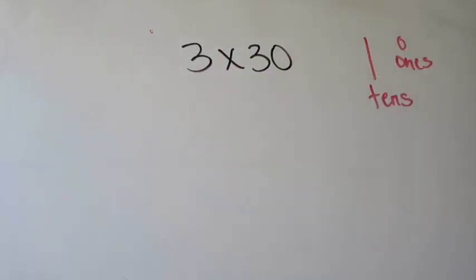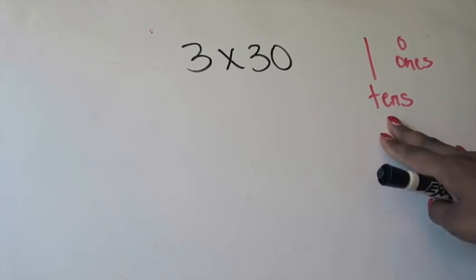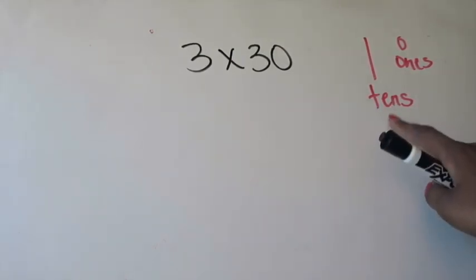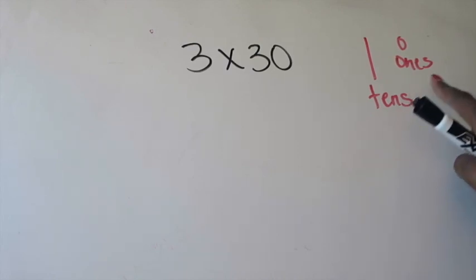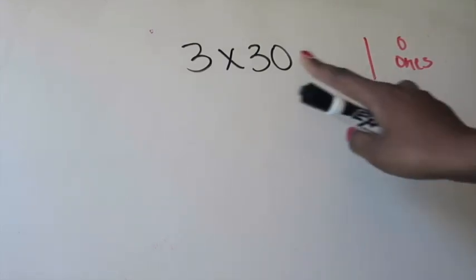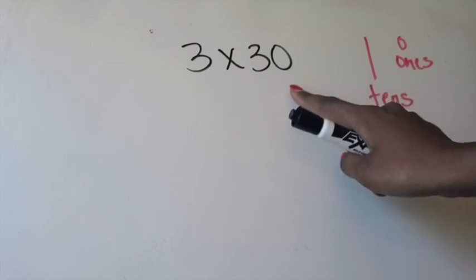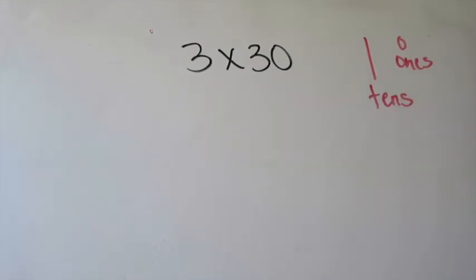The first thing I need to do is look at my little sketches here and say, okay, well, if I need three groups of 30, I'm definitely going to use my tens pieces, but I don't need my ones pieces because there's no ones or there's no value in the ones place, I should say.